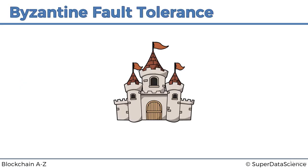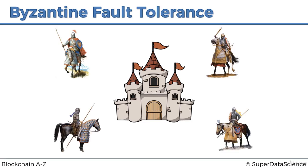The story goes that a long long time ago there was a castle which the Byzantine Empire wanted to attack and take over. It's actually a made-up story — they used the name 'Byzantine generals' but it's not linked to any specific historical event. Nevertheless, there are four generals surrounding a castle who want to attack it — it can be any number of generals, we're looking at an example of four.